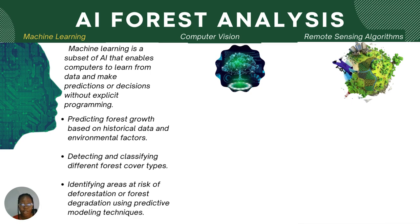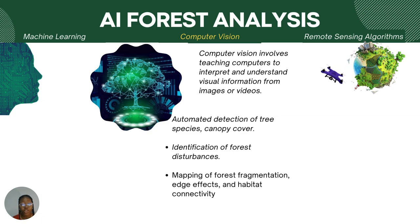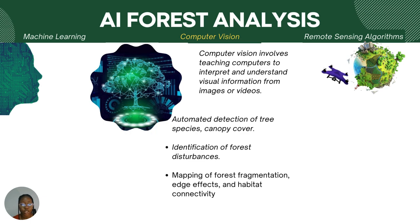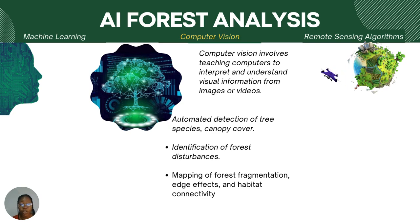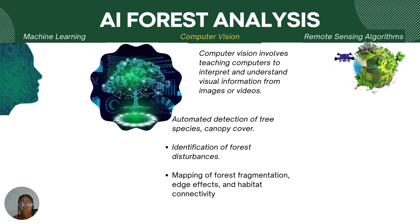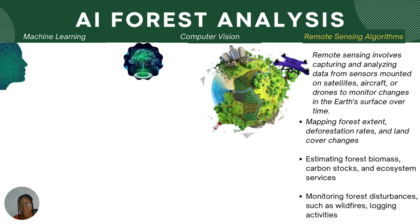Another analytical method we'll be looking at is computer vision. Computer vision involves teaching computers to interpret and understand visual information from images or videos. It can be applied to automated detection of tree species and canopy cover, identification of forest disturbances like wildfire and infestation, and mapping of forest fragmentation, edge effects, and habitat connectivity.